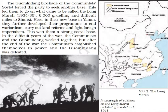The Kuomintang blockade of the communist soviet forces compelled the party to seek another base. This led to what came to be called the Long March in China — 6,000 grueling and difficult miles. In their new base in Yan'an, they further developed their program to end warlordism, carry out land reforms, and fight foreign imperialism. This won them a strong social base. In the difficult years of the war, the communists and the Kuomintang worked together, but after the end of the war the communists established themselves in power and the Kuomintang was defeated.